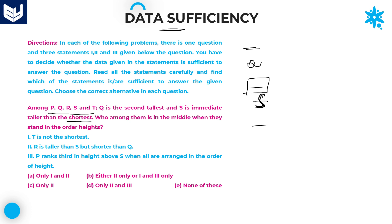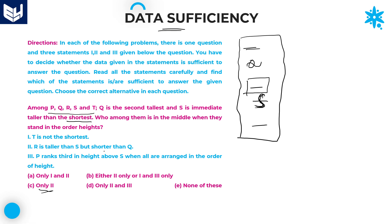Now we will see the statements. It is better to start with the options. Here the option is only 2. The second statement says R is taller than S but shorter than Q. So Q, R, S must be arranged in that order.